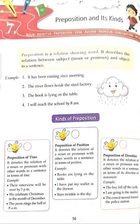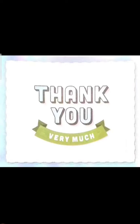For example, preposition of time: Their interview will be over by 5 pm — ki woh cheez kab hogi, 5 pm tak hogi. Preposition of place: Books are lying on the table — ki books kahan hain, table ke upar. Preposition of direction: The boy fell off the cycle — woh cycle se gir gaya — so direction pata chalta hai ki woh cycle se kaise gira.